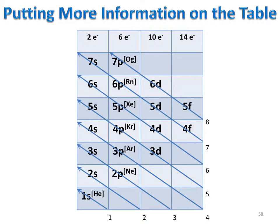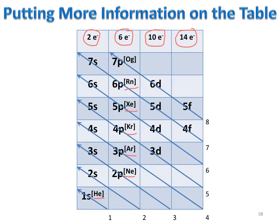Using this table, we can add more information. At the top, there are two electrons in each S-shell, six electrons in each P-subshell, ten electrons in each D-subshell, and fourteen electrons in each F-subshell. At the end of each period, the noble gases are shown along with when they get filled up.